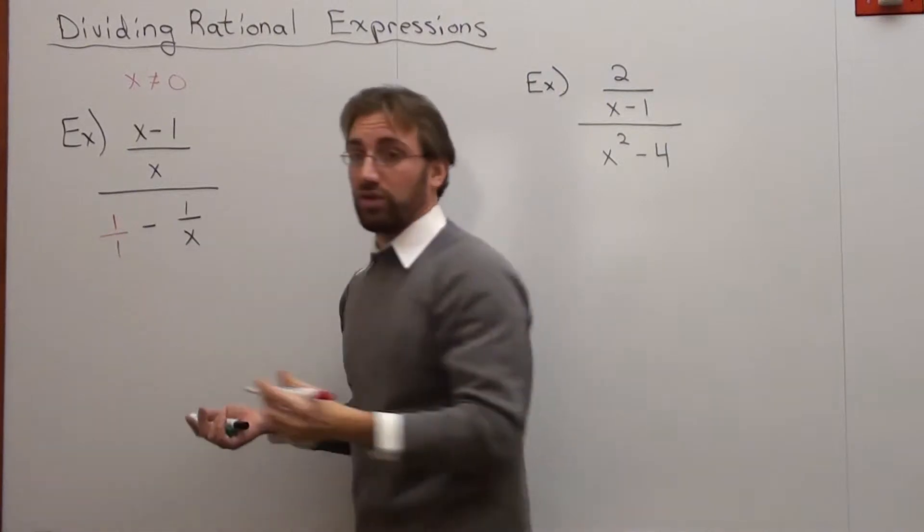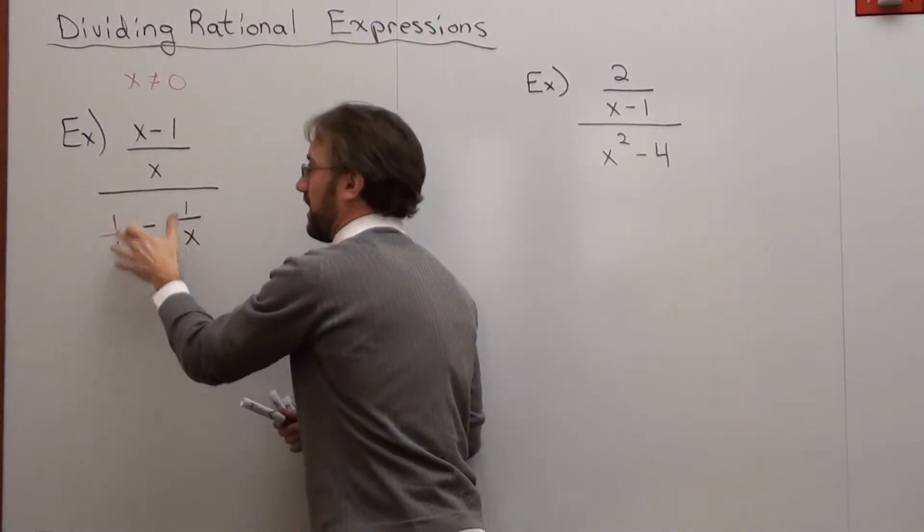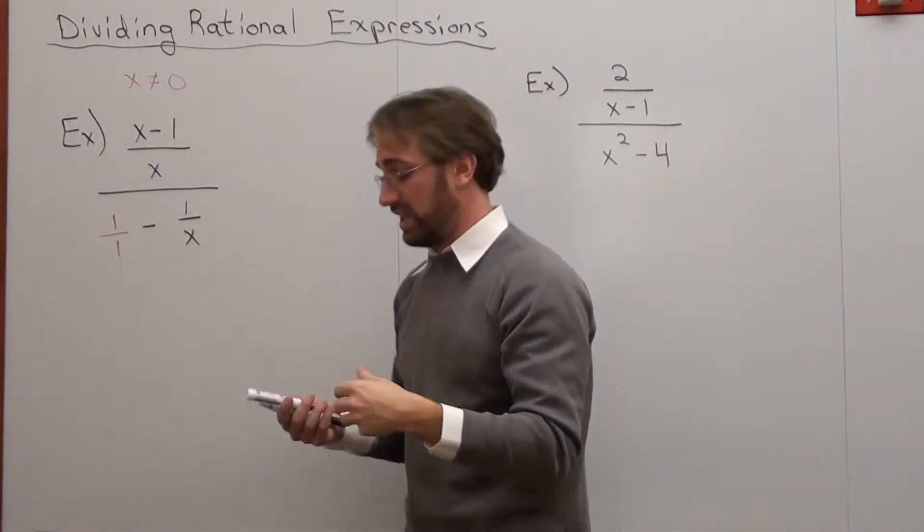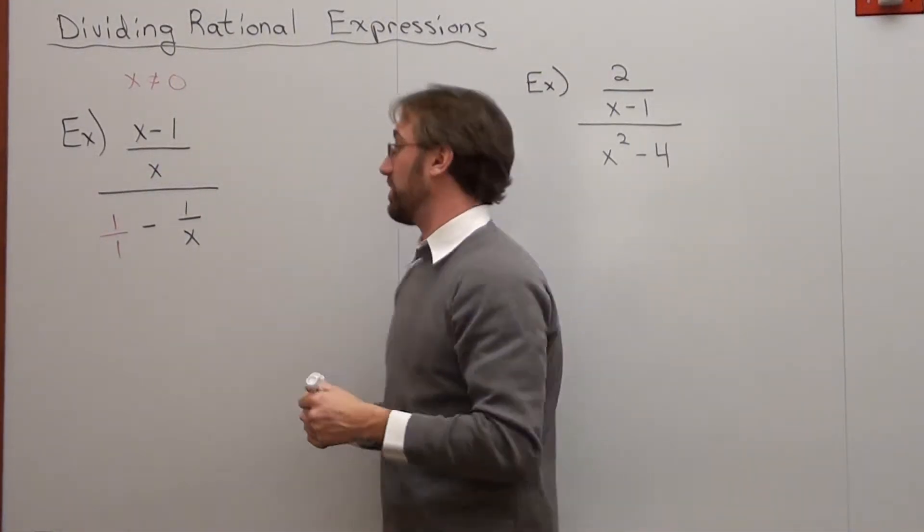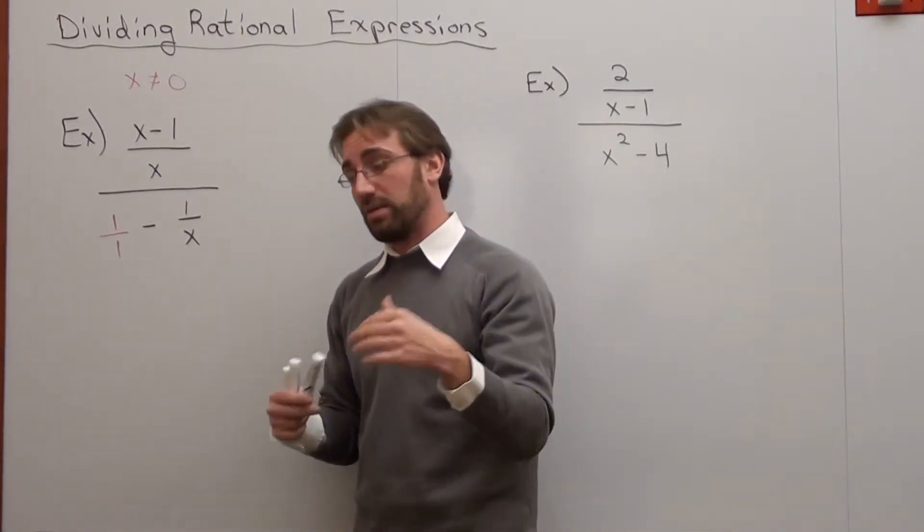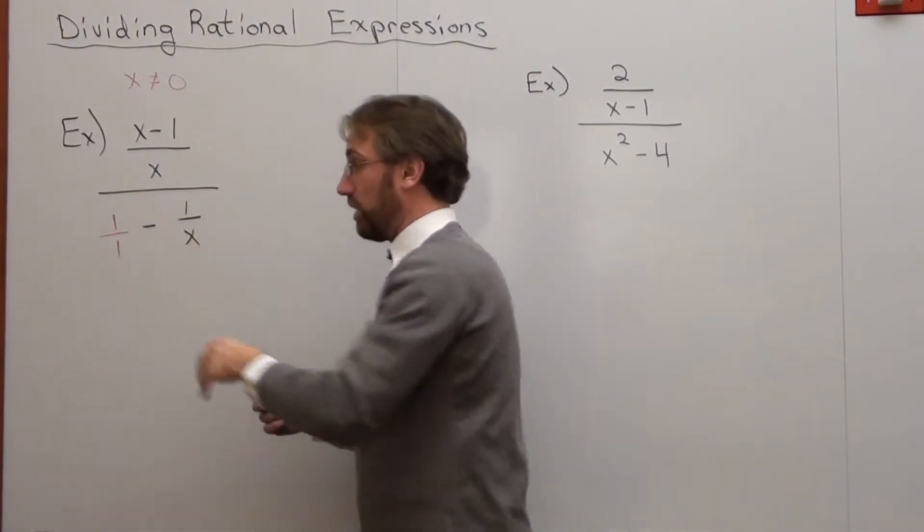1 is the same thing as 1 over 1. Now, what I want to do is I want to get rid of this denominator right here. I can't have this denominator and this denominator because it makes my problem so difficult to take care of. Here's how I'm going to do it. I'm going to multiply by the LCD, LCM, least common multiple, or least common denominator of this fraction right here, this bottom one.